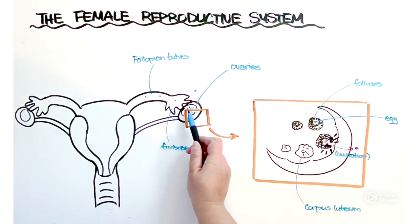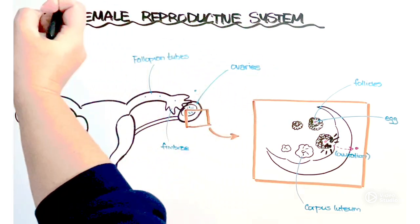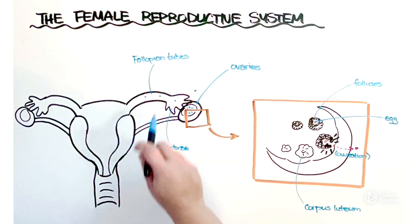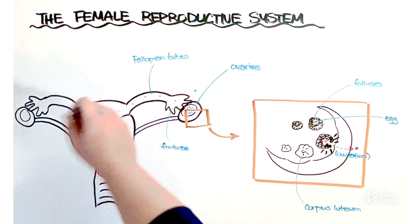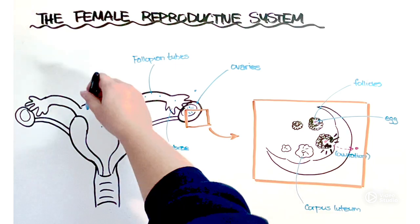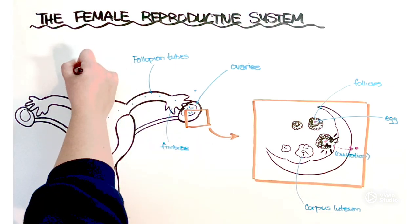So again when the egg is ovulated the fimbriae sweep it up and then it enters the fallopian tubes which is the site of fertilization. Whether it's fertilized or not, that egg will continue moving and eventually it will enter this location here known as the uterus.